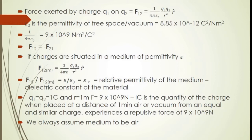We had assumed the medium to be free space or vacuum, so we used ε₀. If charges are situated in a medium of permittivity ε, we replace ε₀ with ε, giving F12(medium) = (1/4πε)(Q1·Q2/R²)·r̂. Dividing the two equations, F12 / F12(medium) = ε/ε₀, which is defined as the relative permittivity εᵣ, also known as the dielectric constant. So ε = ε₀·εᵣ.